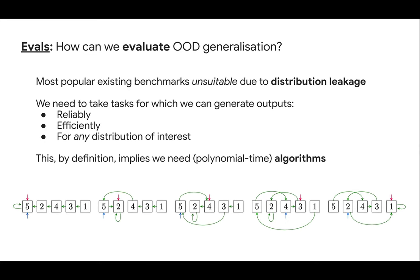By efficient I'll typically mean polynomial time. Here is one example: a standard sorting algorithm, insertion sort, which gradually sorts a list — say 5, 2, 4, 3, 1 — towards eventually having a sorted list 1, 2, 3, 4, 5. You can see how it gradually adjusts the list by repeatedly sorting the current element into place.